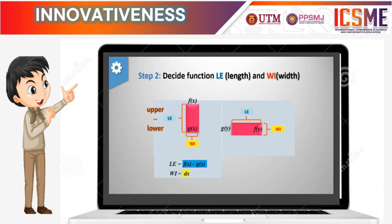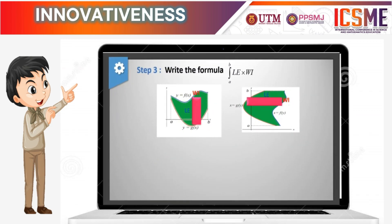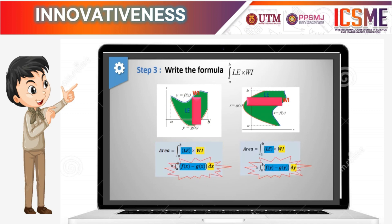For the horizontal block, we have the functions f(y) and g(y). We always take the right function subtract the left function for the length — that is, length equals f(y) minus g(y) — and the width is the small change of y, that is dy. Step 3: write the formula in the integral form. For the vertical block, we have the integral of length times width with the function f(x) minus g(x), integrating with respect to x. For the horizontal block, we have the integral of length times width with the function f(y) minus g(y), integrating with respect to y.